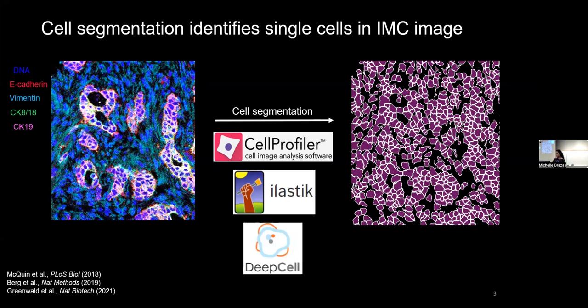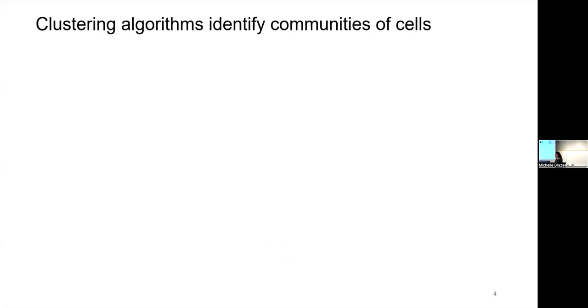So for example, in this image, these purple little regions that you see correspond to different pixels belonging to the same cell, and the white outlines denote the cell boundaries. So once we have our IMC image and the single cells, a common next step is to then use these to cluster the single cells to identify communities of cells.